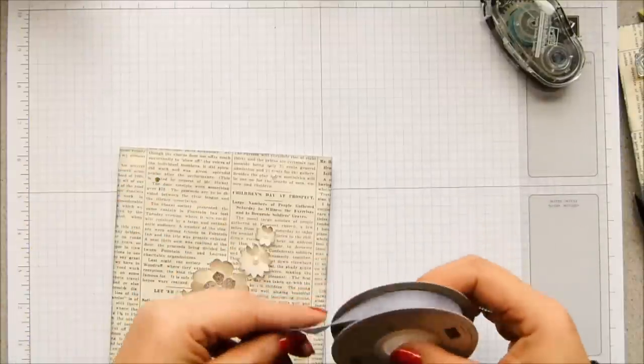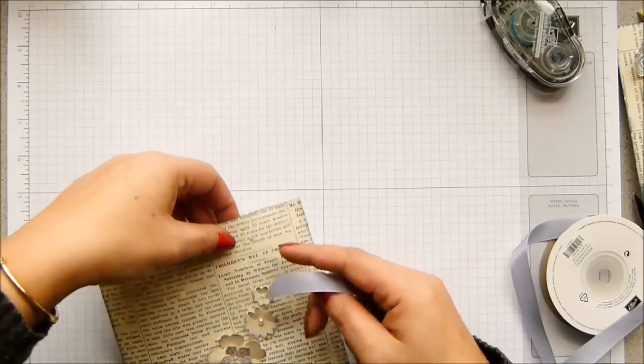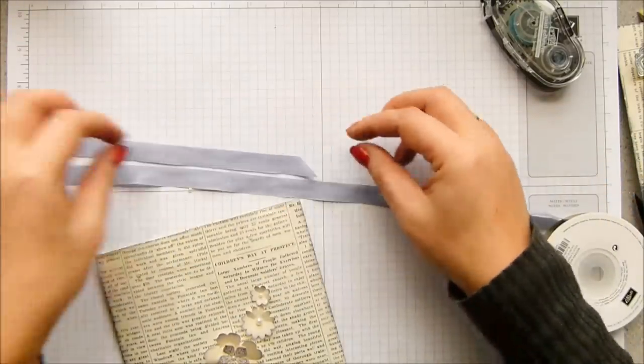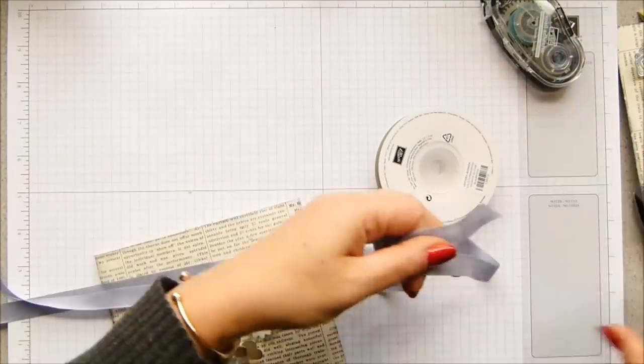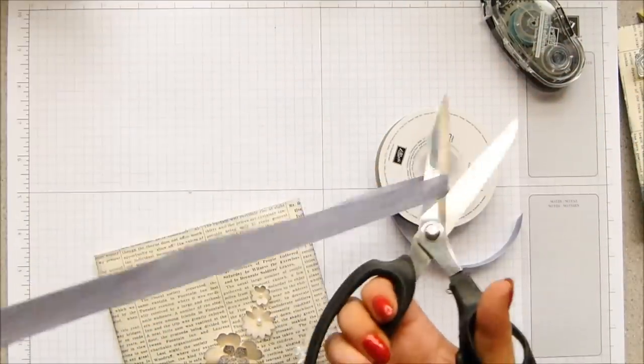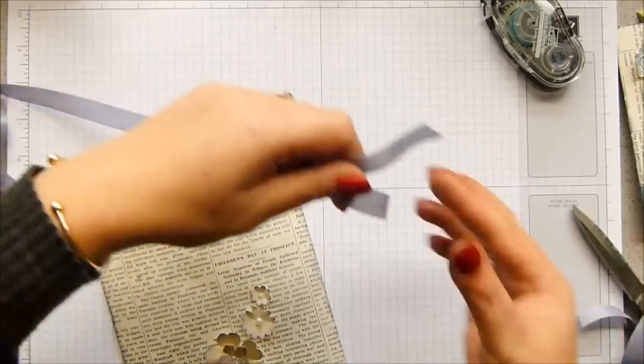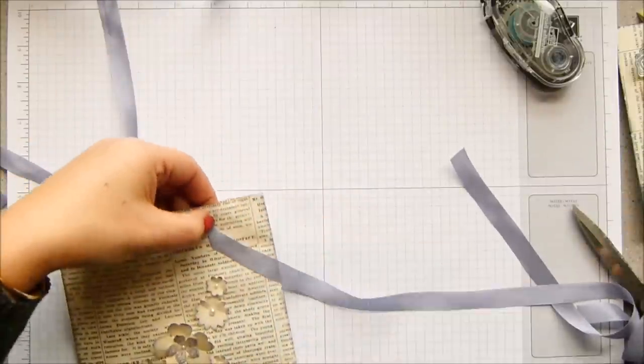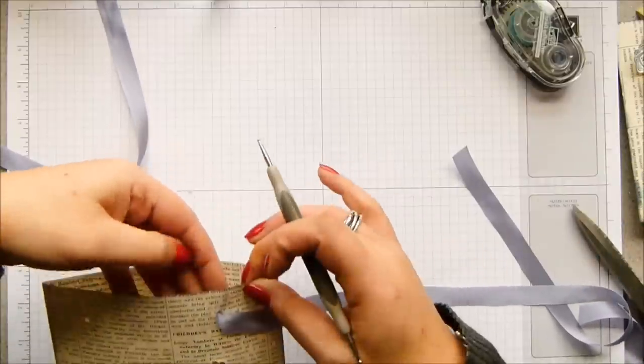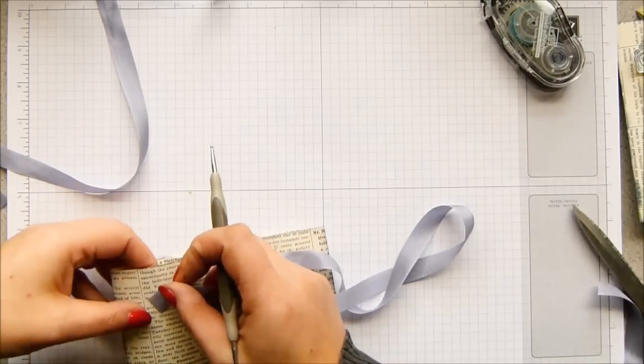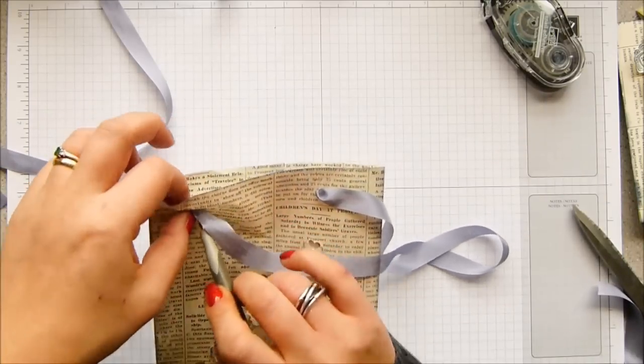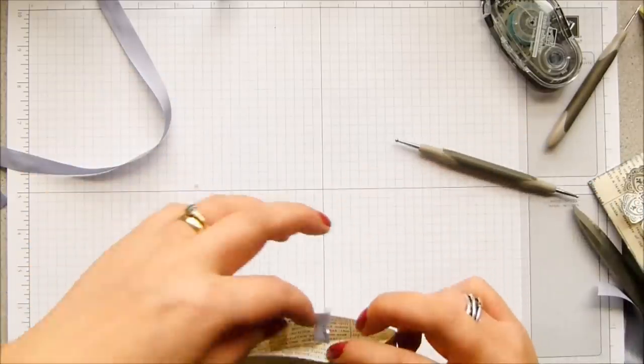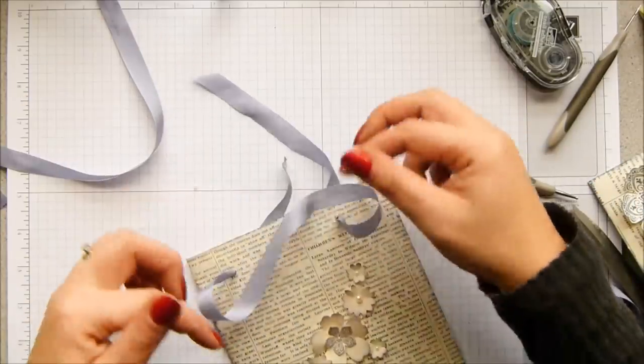There we go. And then I can bring in my matching wisteria wonder seam binding ribbon. And do you know what? I'm going to grab two lengths, I think. Just pipe them through.